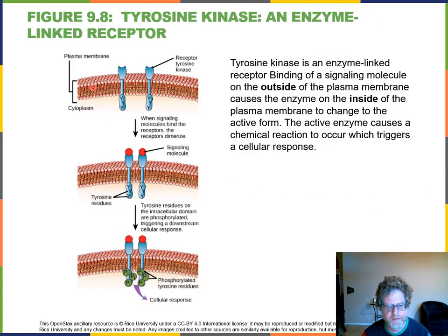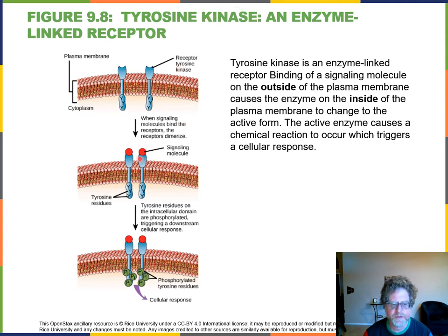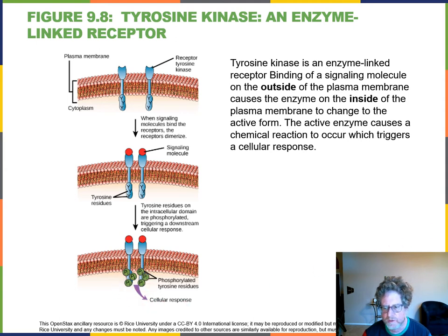Another plasma membrane receptor is tyrosine kinase. Kinases are enzymes that add phosphate groups. When a receptor signals to this tyrosine kinase, phosphate groups (PO4²⁻) are added, and those phosphate groups will cause a cellular response.